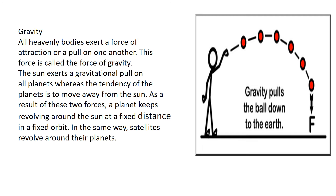As a result of these two forces, a planet keeps revolving around the sun at a fixed distance in a fixed orbit. In the same way, satellites revolve around the planets. For example, in this picture, a man is throwing a ball up in the air, but because of gravitational pull, the ball comes back down to the earth.